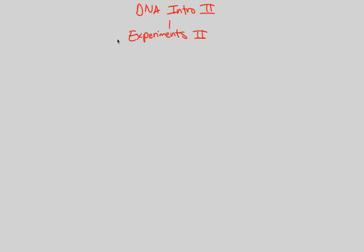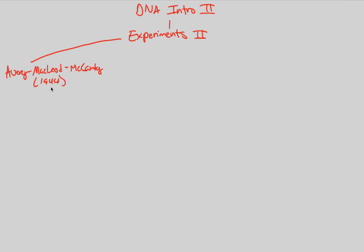Another important experiment was conducted by three people and is labeled by their names. It's referred to as the Avery, MacLeod, and McCarty experiment. These three scientists were way ahead of their time, establishing something very interesting in 1944. This research helps support the DNA theory, and let's see how Avery, MacLeod, and McCarty support the idea that DNA is the genetic material.